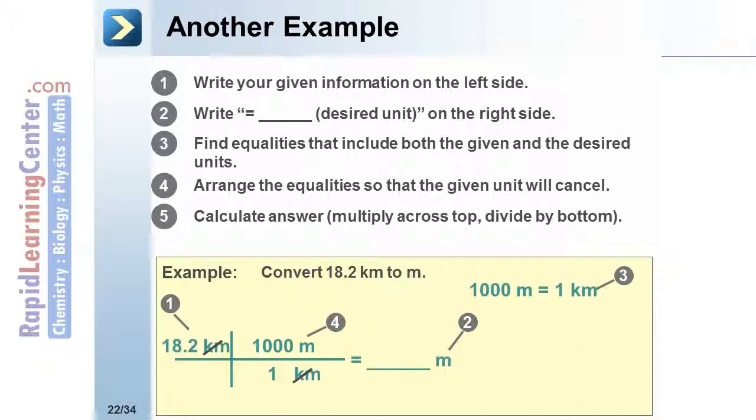To calculate: 18.2 times 1,000 divided by 1 equals 18,200 meters.